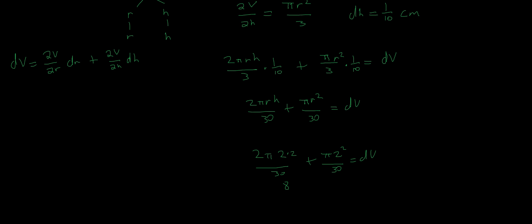As you can see, we now have pi over 30 plus 4 pi over 30. This gives us 12 pi over 30, which we can reduce to 4 pi over 10, which is going to give us 2 pi over 5. As you can see, our total error in volume of this cone is 2 pi over 5.